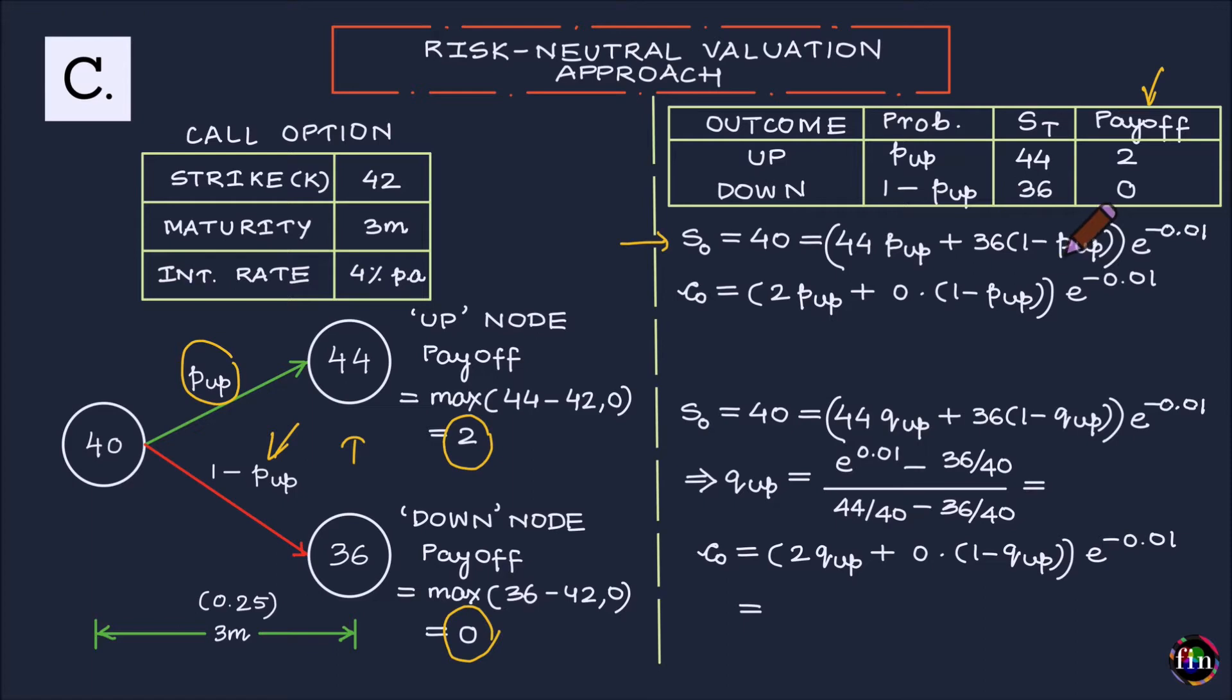This is the expected value discounted to today using the risk-free rate of interest. It's e to the power minus 0.04 times 0.25. This is the equation which I am proposing. If this equation can be defended,